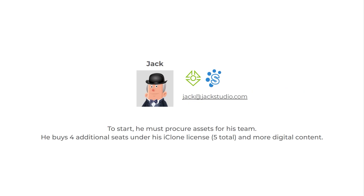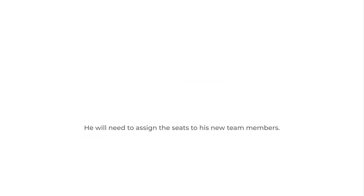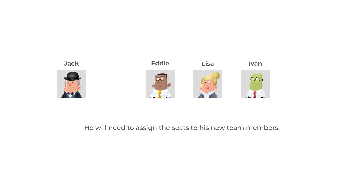To start, he must procure assets for his team. He buys four additional seats under his iClone license and more digital content. He will need to assign the seats to his new team members.